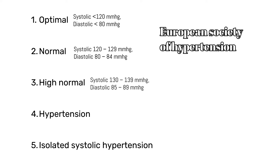A systolic blood pressure ranging from 130 to 139 millimeters of mercury and diastolic blood pressure ranging from 85 to 89 millimeters of mercury is called high normal blood pressure. According to the European Society of Hypertension, a systolic blood pressure above 140 millimeters of mercury and diastolic blood pressure above 90 millimeters of mercury is called hypertension.